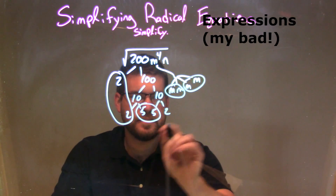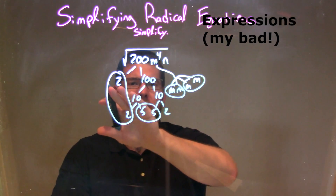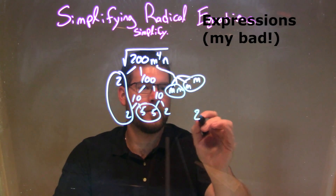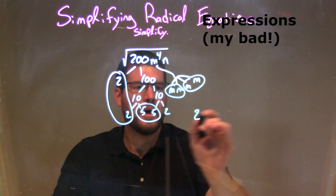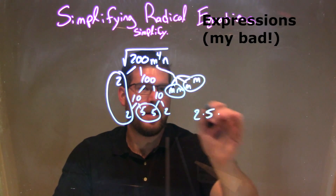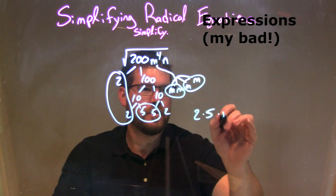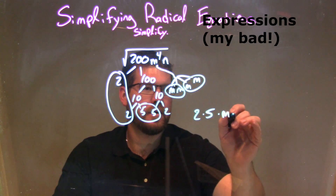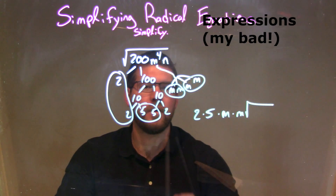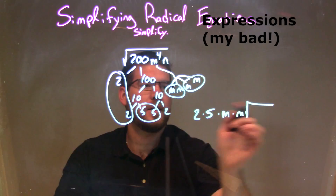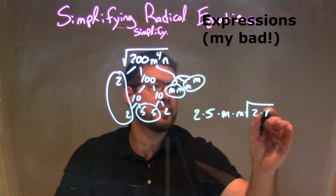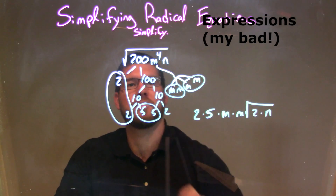So I write my final answer. The pairs represent what goes on the outside: these two 2s represent one 2 on the outside, these two 5s represent one 5 on the outside — we multiply. That first pair of ms, times the second pair of ms. Now we have the square root of what's left on the inside, which is this 2 times that n. Don't forget that n that was up there.